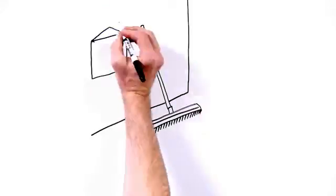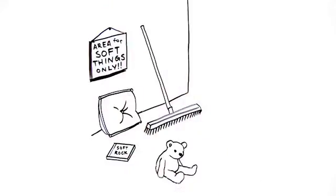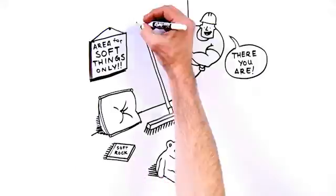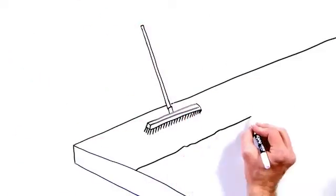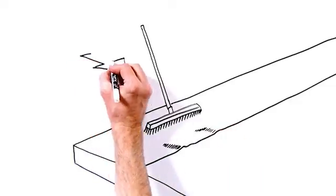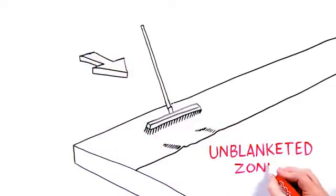Step 3. Using a soft bristle push broom, smooth out wrinkles and air pockets in the blanket. Be sure to brush toward the unblanketed section.